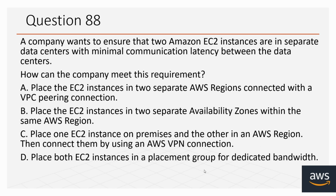Question number 88: A company wants to ensure that two Amazon EC2 instances are in separate data centers with minimal communication latency between the data centers. How can the company meet this requirement? Options: A. Place the EC2 instances in two separate AWS regions connected with VPC peering. B. Place the EC2 instances in two separate availability zones within the same AWS region. C. Place one EC2 instance on-premises and the other in an AWS region, connected by AWS VPN. D. Place both EC2 instances in a placement group for dedicated bandwidth. The correct option is B.